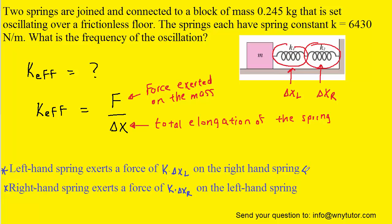According to Newton's Third Law, these two forces must be equal to each other. We can then see that the spring constant k would divide out from that equation, and therefore, the total elongation of the left-hand spring must equal the total elongation of the right-hand spring.